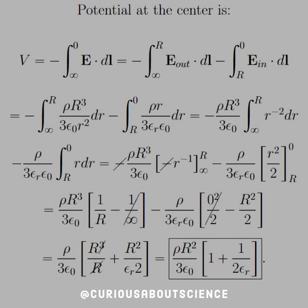So set that up for the appropriate bounds. From infinity to the outer radius of the sphere, we have the electric field on the outside. And from the radius of the sphere to the center, we have the electric field on the inside.